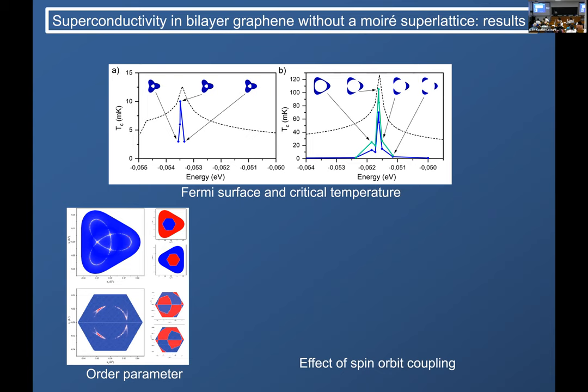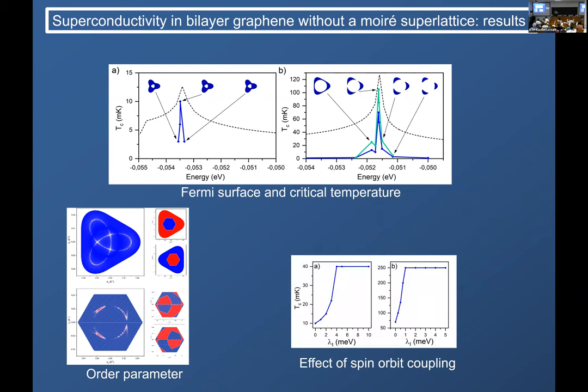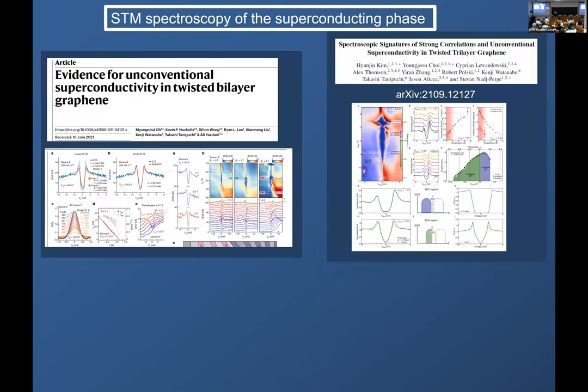Notice here, this is the order parameter, but it shadows the Fermi surface. Notice this behavior—we only have superconductivity when the Fermi energy is very close to a van Hove singularity, which is consistent with the previous theoretical results I mentioned to you by Andrei Chubukov et al. Actually, we have added spin-orbit coupling because the Caltech group, the Stevan Nadj-Perge group—and amazingly we found that the critical temperature grows with spin-orbit coupling and then it saturates. So it will depend on the substrate.